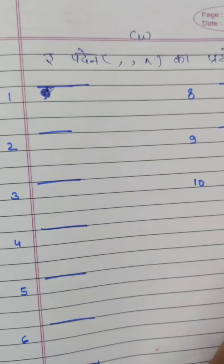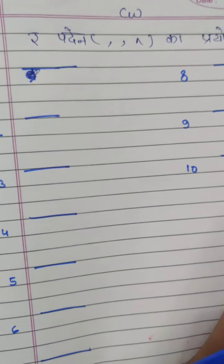So children, let's write Padeen ki matra ka prayog. First word is B, B mein Padeen ki matra and S, it became brush.